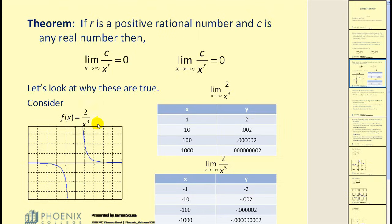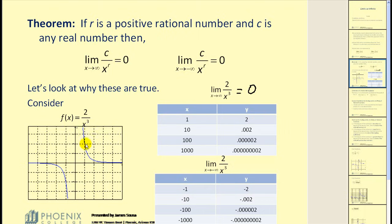Let's consider the function 2 divided by x cubed, graphed here, and determine the limit as x approaches positive infinity. We can analyze this using a t-table or the graph. Using the t-table, as x approaches positive infinity, I chose values starting at 1 and increasing by powers of ten, and you can easily see that the y values are getting smaller and smaller, approaching zero. So this limit equals zero. Graphically, as we approach positive infinity moving to the right, the y values are approaching zero.